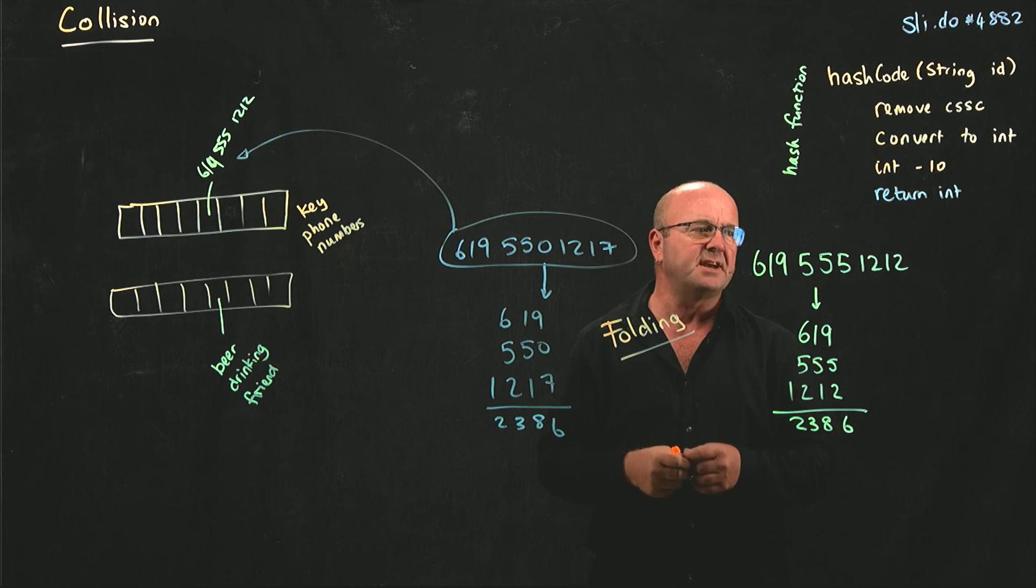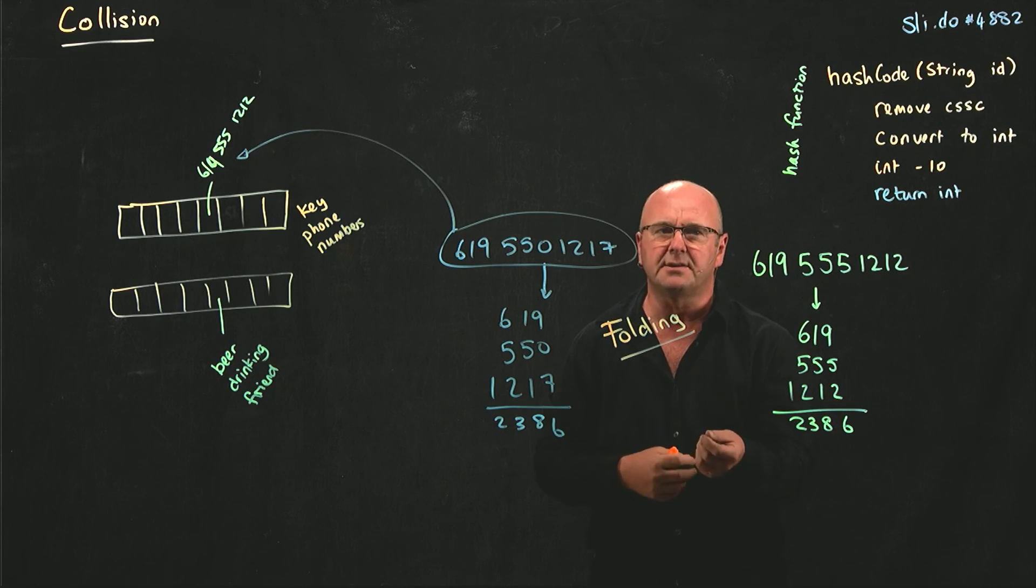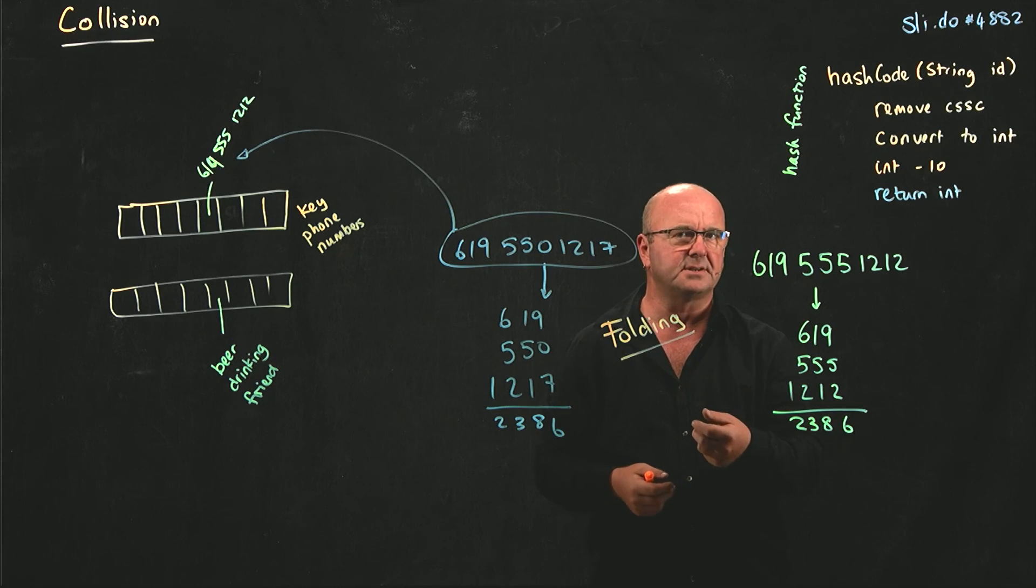We can't introduce random numbers because the next time we run the code, we won't know what the random number is.